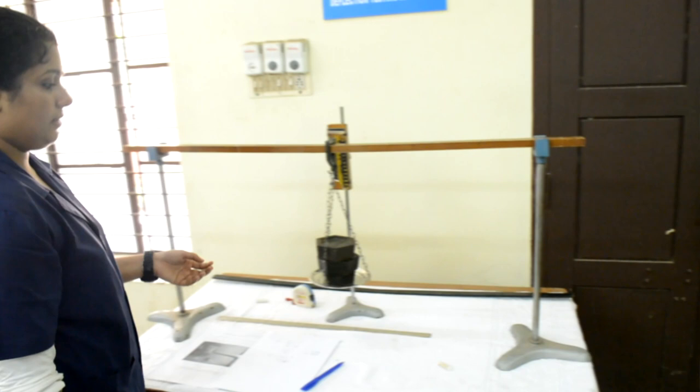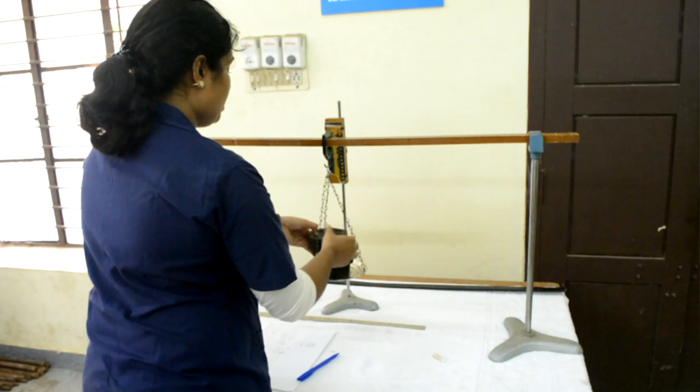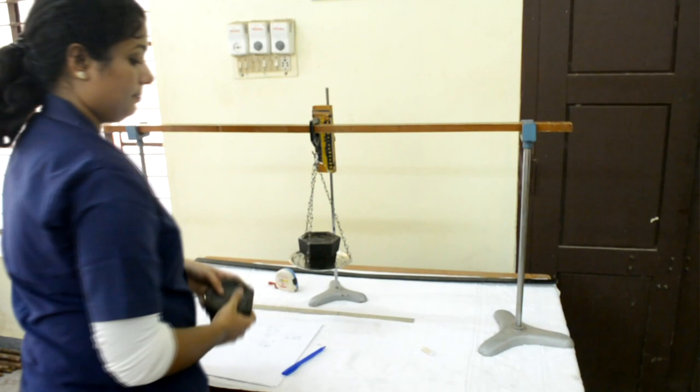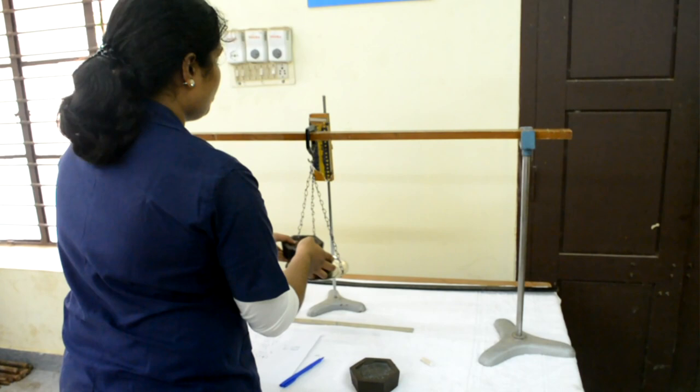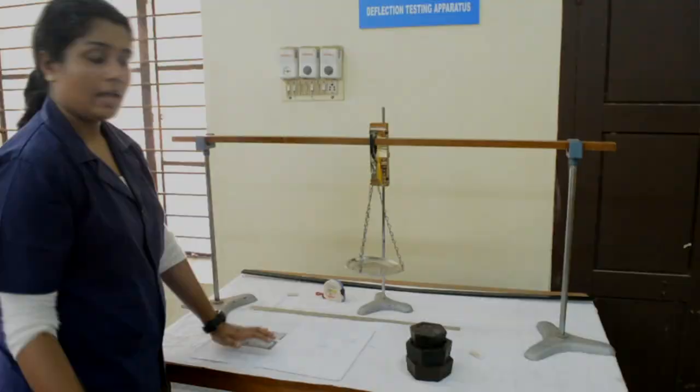Now we can unload it. First the reverse procedure is followed. First the 2 kg is taken. Again measure the deflection. Now the 2 kg is taken and the deflection is measured. Again remove the balance 1 kg, and the deflection becomes zero.